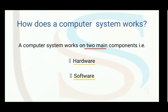How does a computer system work? There are two main components needed for a computer system to work accurately without making any mistake: number one, hardware, and number two, software. First we will study what hardware is and what the different types of hardware are, and then we will move forward towards software.